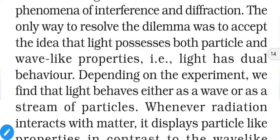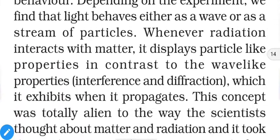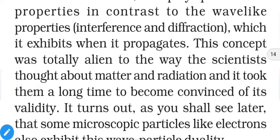Light is either a wave — a disturbance in the fabric of space — or a stream of particles. For example, when a bomb blasts, it shoots out particles in all directions; similarly, particles of light (photons) travel in a straight direction, representing the particle nature of light. Whenever radiation interacts with matter it displays particle-like properties, in contrast to wave-like properties such as interference and diffraction, which it exhibits when it propagates.